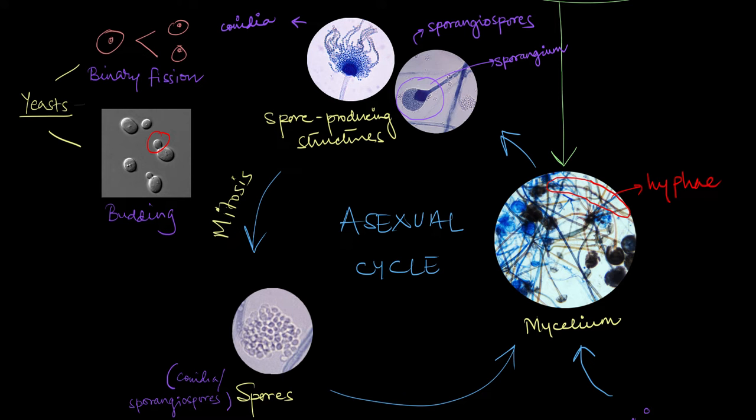Now there's another form of asexual reproduction which is seen in some fungi and it is called fragmentation. In fragmentation, the hypha kind of breaks or fragments into separate pieces, kind of like this. Each of these fragments or pieces will give rise to new fungal colonies. So this is another form of asexual reproduction.